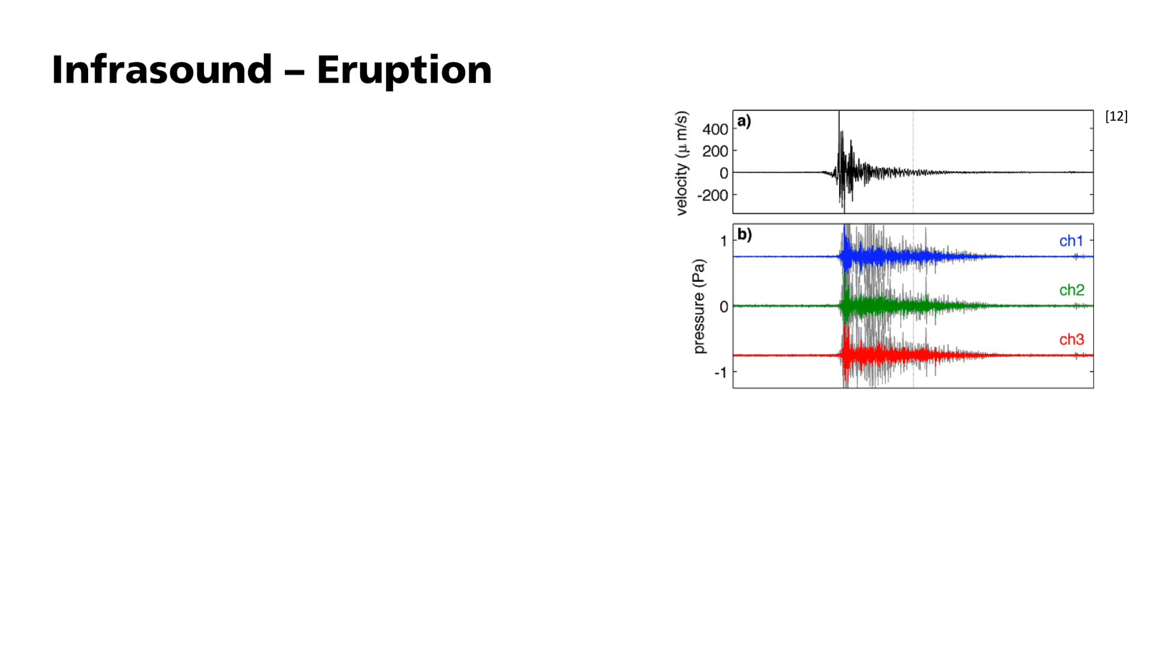This illustration shows a comparison of infrasound and seismic observations for an explosive eruption of Santiaguito in 2014. In black, you can see a two-minute recording of the vertical component of a seismometer that was installed about 500 meters north of the active crater. The three colored traces are infrasound recordings from about 700 meters to the east. At that side, an array of three instruments was built to locate the direction of the sound signal. Here, you can see a clear signal on all the recordings.